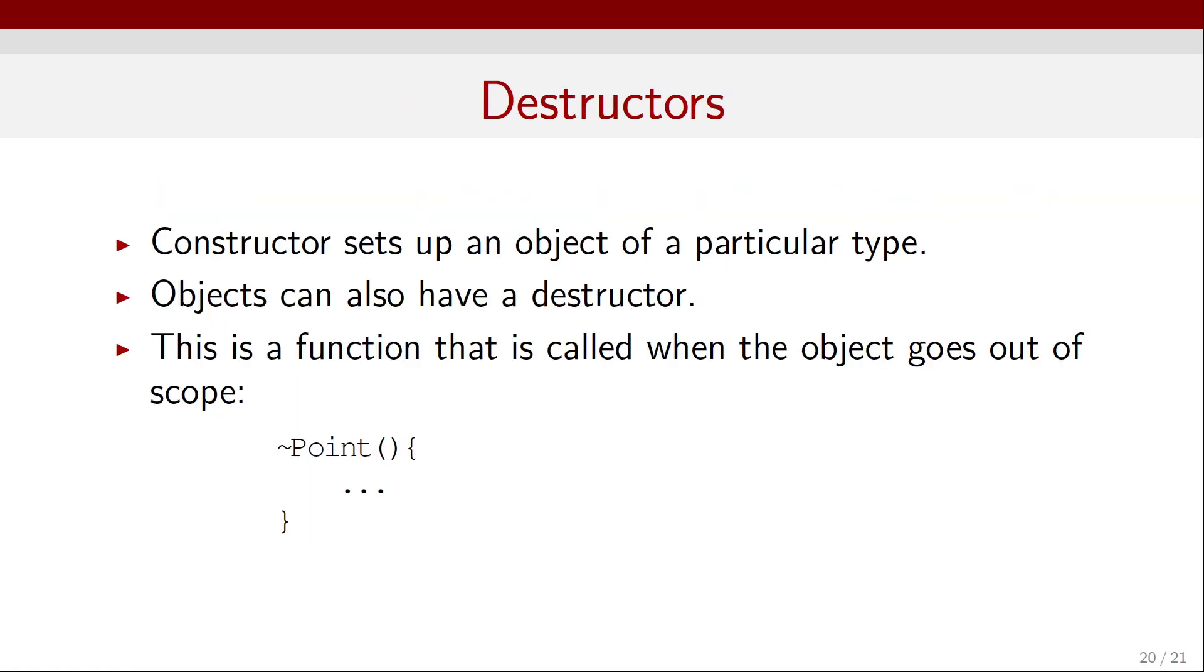And finally, we can also have destructors. So, a constructor sets up an object of a particular type, but objects can also have a destructor. This is a function that is called when the object goes out of scope, so it's not used anymore. For example, we can do that using the tilde sign. So we can use tilde Point, and then the same code as before.